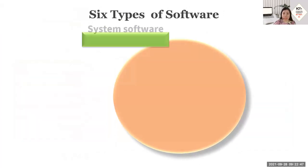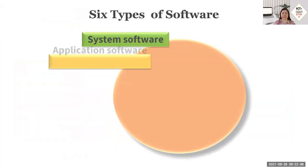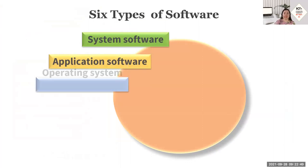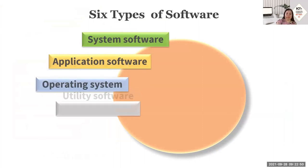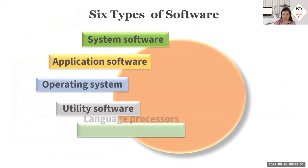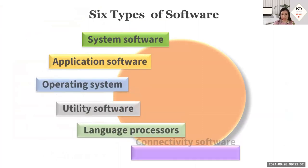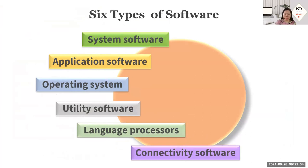There are actually six types of software. We have the system software, the application software, the operating system, utility software, language processors, and connectivity software.